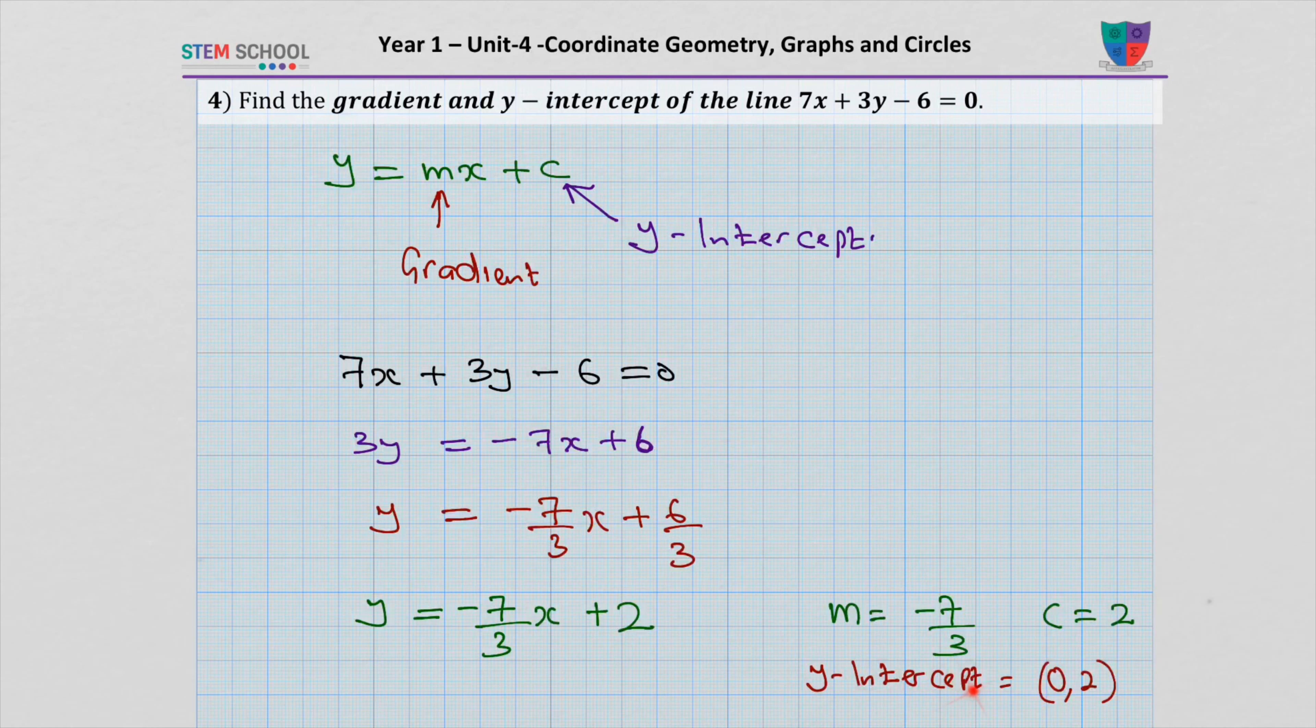Therefore the y-intercept has a coordinate of 0, 2. When x is 0, y is 2.